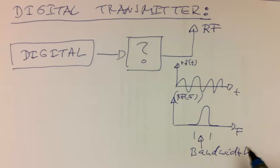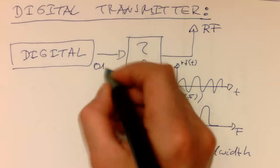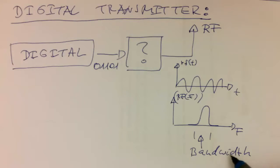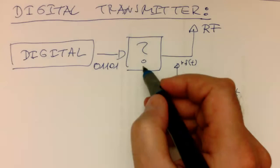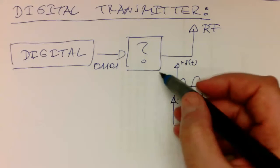So we need to transform our binary sequence here into this band-limited signal here ultimately. So this magic box, this question mark needs to do all that. So we now need to refine this box here and have a look what's inside.